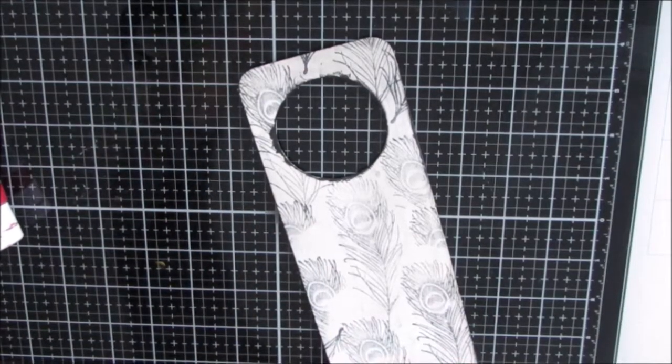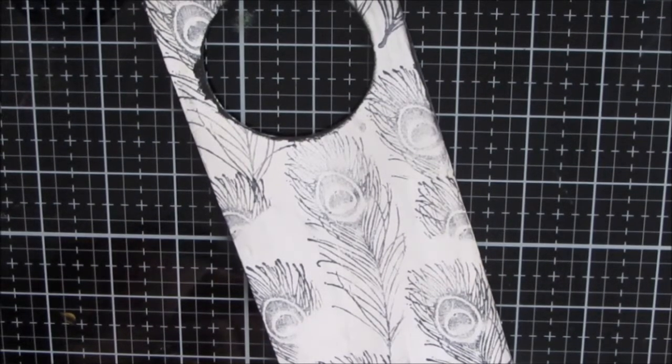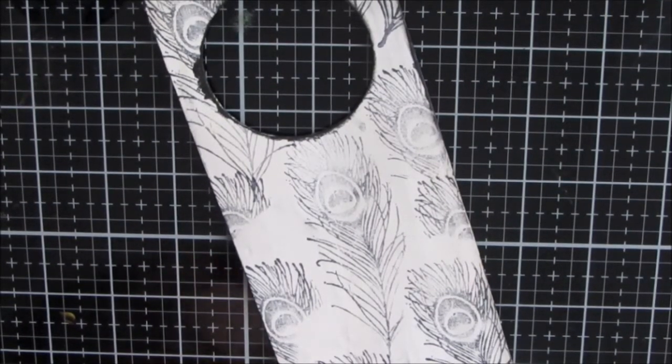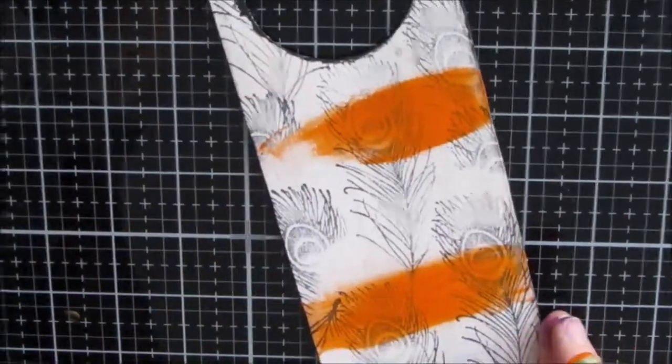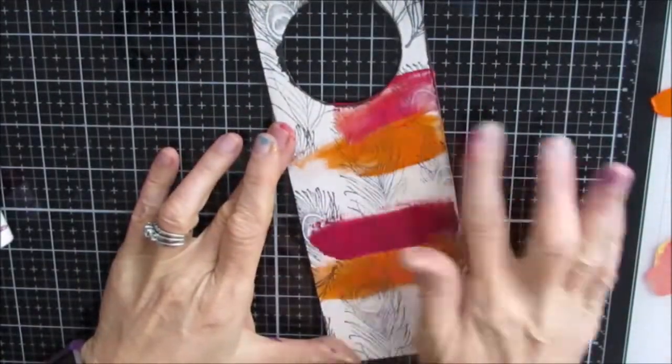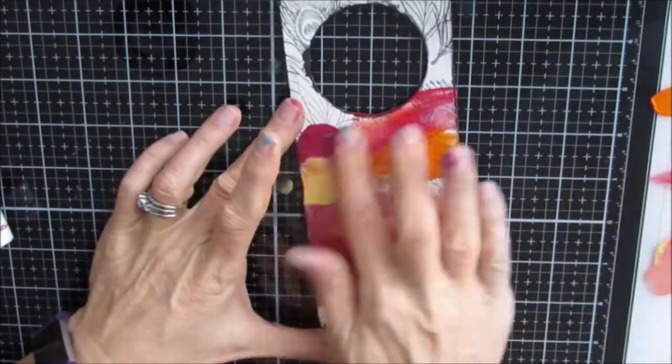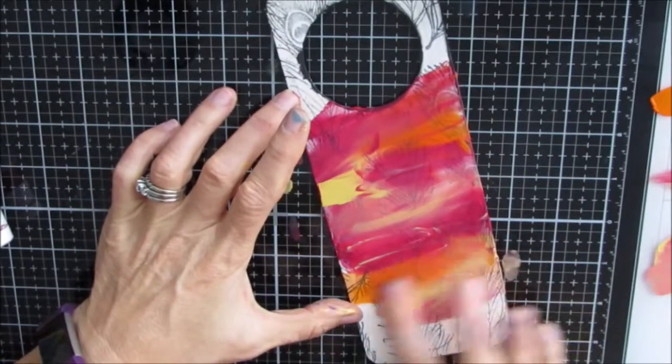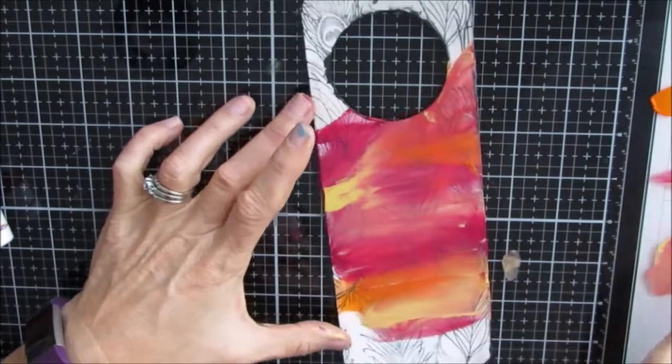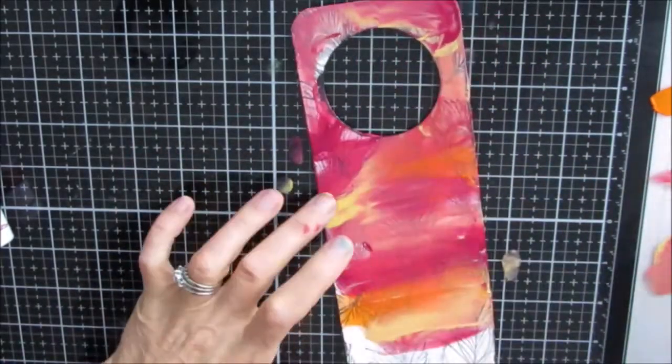So with this one, I want to go in with some warm colors. So I have yellow and orange and alizarin crimson, I believe, or magenta. And I'm mixing it. Non-peacock colors, but I want that stark contrast because I want to use that black modeling paste. And I love how that pops off of these sunset inspired colors.